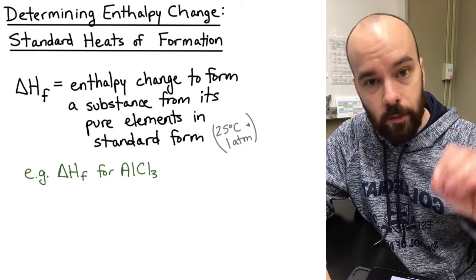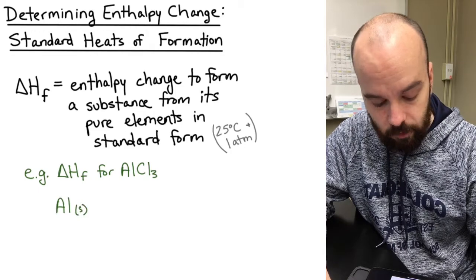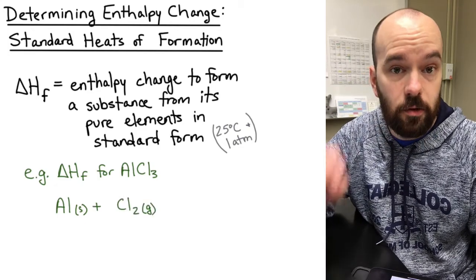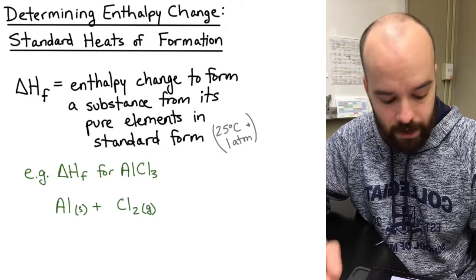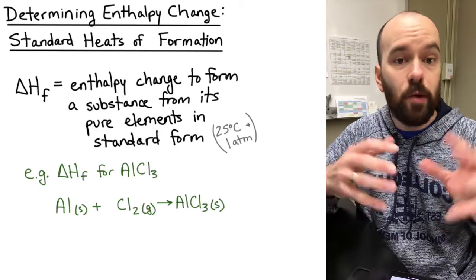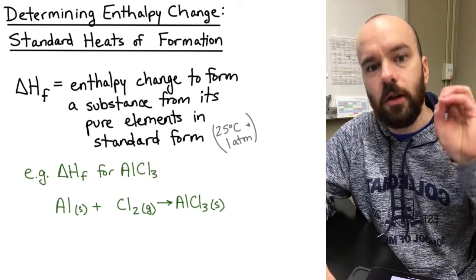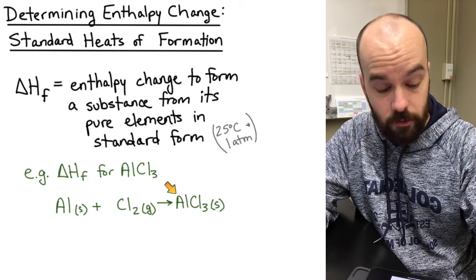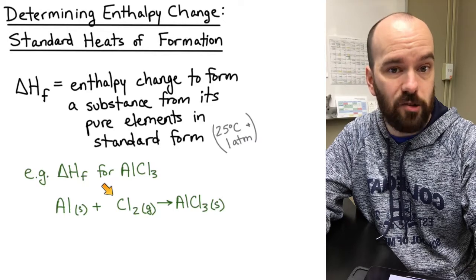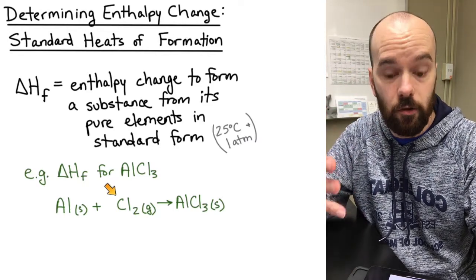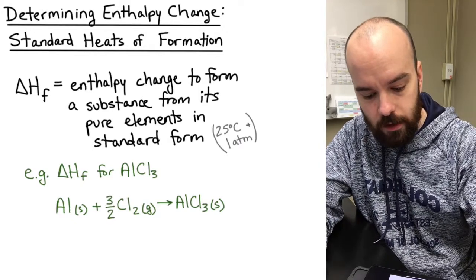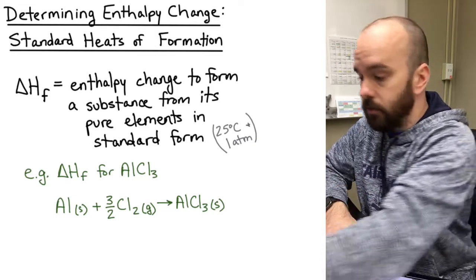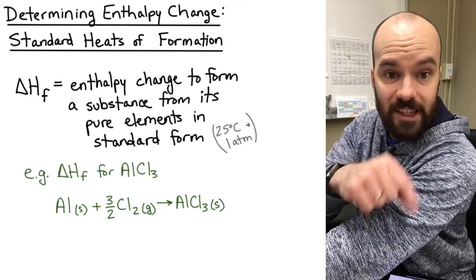Aluminum in its standard form is a solid metal, so we write Al(s). Chlorine exists as a diatomic gas, so we write Cl₂(g). Those combine to form AlCl₃(s). We must balance the reaction, but one special rule for heats of formation: they always correspond to producing exactly one mole of the product, so we use a coefficient of one for AlCl₃. To balance, we place three-halves in front of Cl₂ — three-halves times two gives us three. That's the balanced formation reaction for AlCl₃, which corresponds to the standard heat of formation value we can find online.